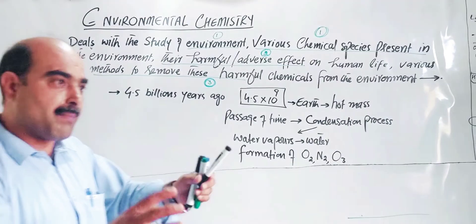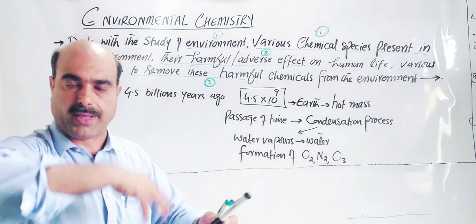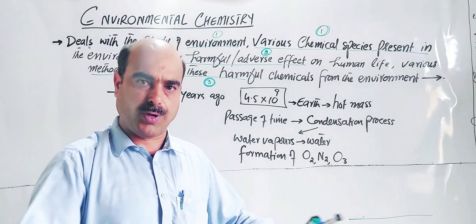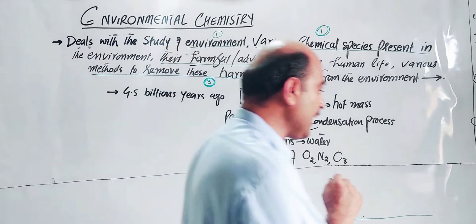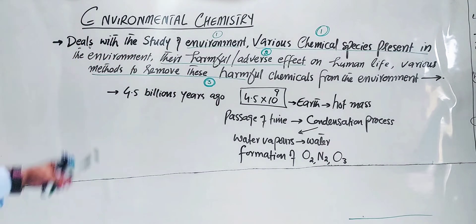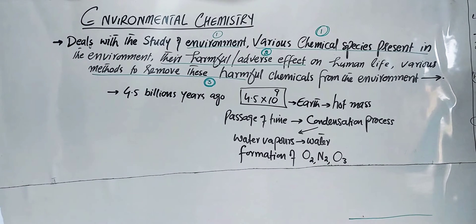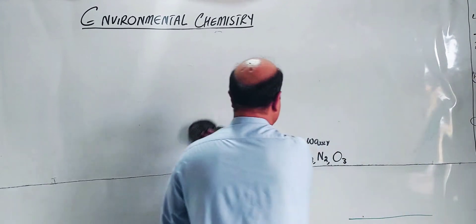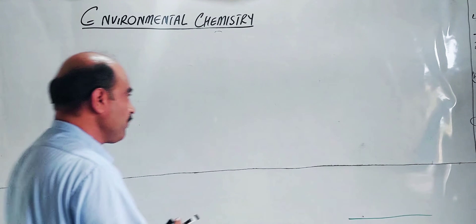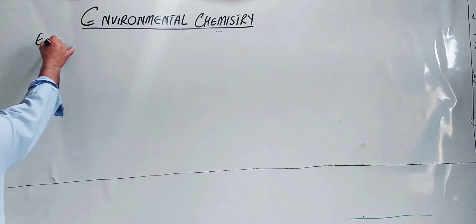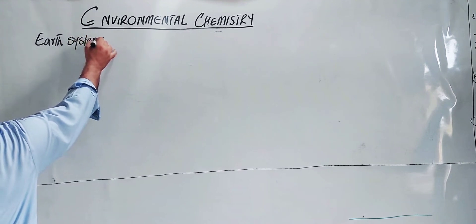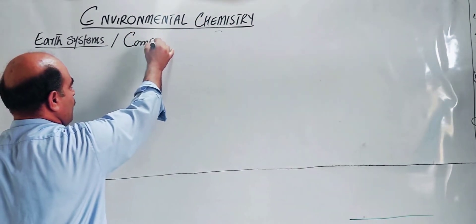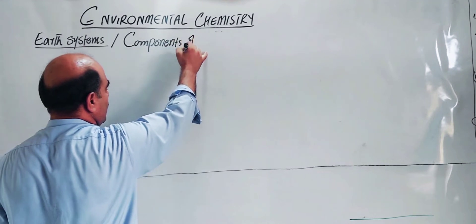Next: the components of environment. What components does the environment have? The environment surrounds us — plants, water bodies, atmosphere, rocks, soil — all are part of the environment. The components of the environment are organized into major systems. There are four main components of the environment.